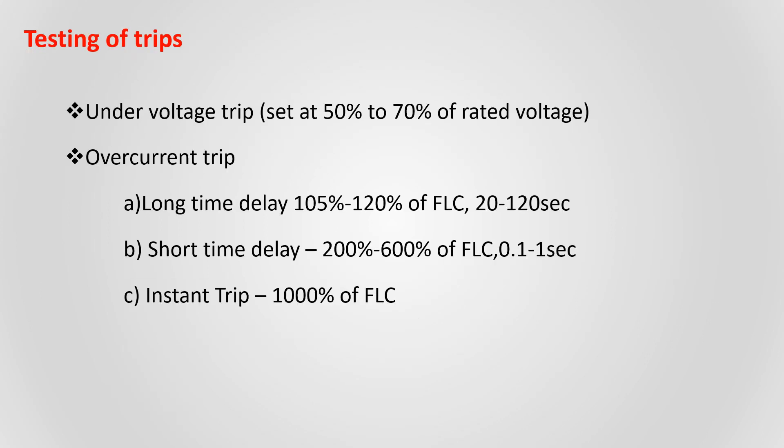Testing of trips: Undervoltage trip, or another name is no-volt coil, set at 50-70% of rated voltage. When voltage drops below the set value of UVT setting, then the UVT coil trips the breaker. It also prevents the circuit breaker from being closed when the generator is producing low voltage or zero voltage.